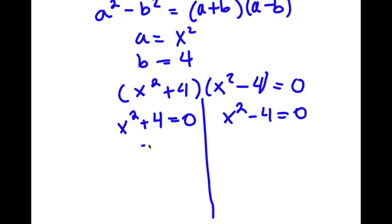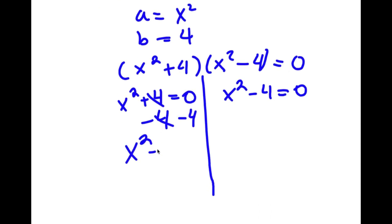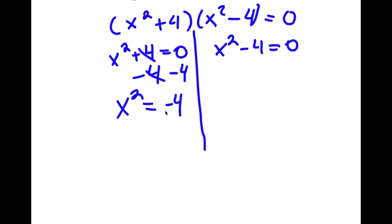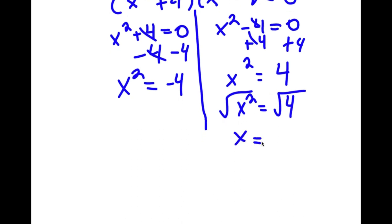For x squared plus 4 equals 0, subtracting 4 from both sides gives x squared equals negative 4. For x squared minus 4 equals 0, adding 4 to both sides gives x squared equals positive 4. Taking the square root of both sides: the square root of x squared is x, and the square root of 4 is positive or negative 2.